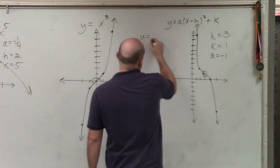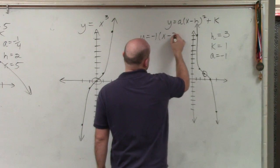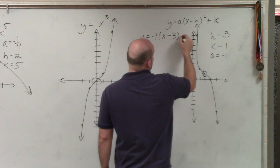Therefore, the equation of this graph is negative 1 times x minus h plus 1.